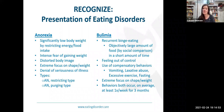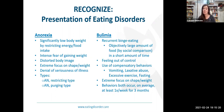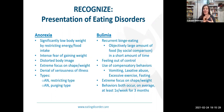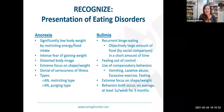Bulimia nervosa is another main category. It involves reoccurring binge eating — eating objectively large amounts of food in a short period of time with a sense of feeling out of control — followed by a compensatory behavior. That compensation could be vomiting, laxative use, excessive exercise, or even fasting. It is a way to compensate for the binging that has occurred. The main pieces are the binge eating and the compensatory behavior.